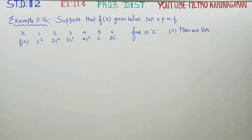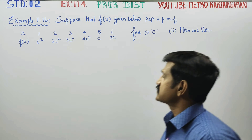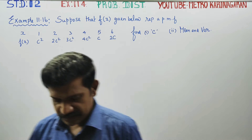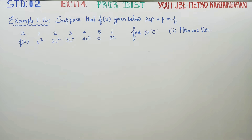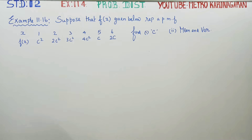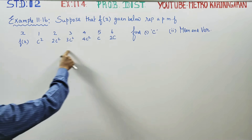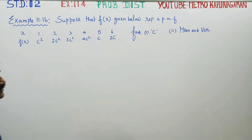Dear 12th standard students, in probability distribution, Example 11.16: suppose that f(x) given below represents a probability mass function. In the table on the probability mass function, find C, mean, and variance.